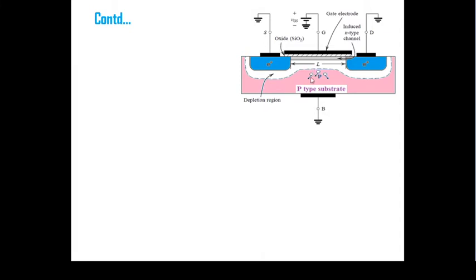The depletion layer is populated with the bound negative charge, in which the charges are uncovered because the neutralizing holes have been pushed downward. This positive gate-to-source voltage also attracts electrons from the source and drain regions, making a channel — simply an N region. So we have an N+, N, N+ region, inverting the P-type substrate to an N layer at the surface — that is the inversion layer. The minimum voltage required for this is the threshold voltage.